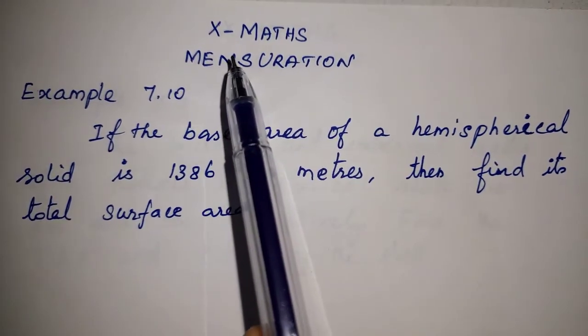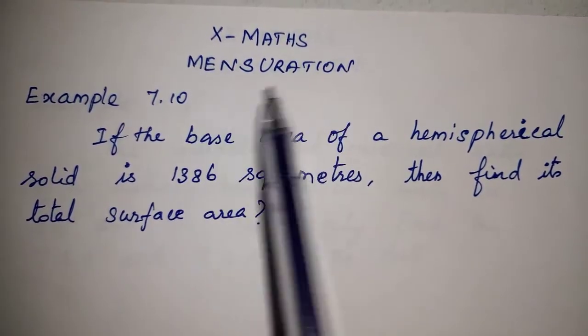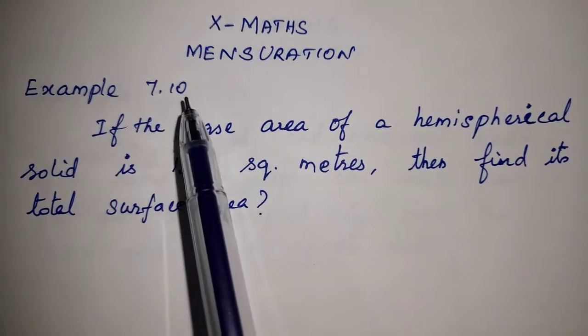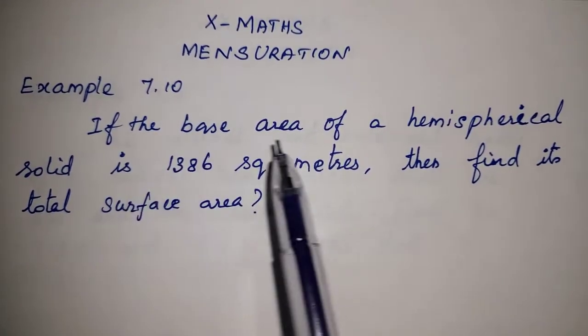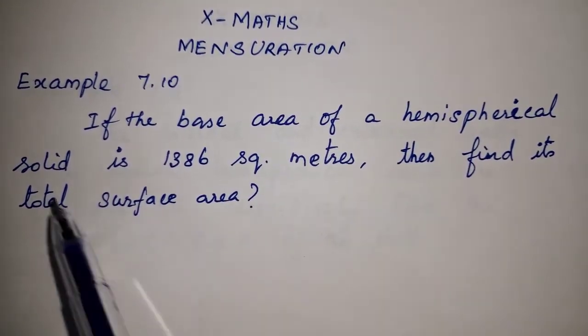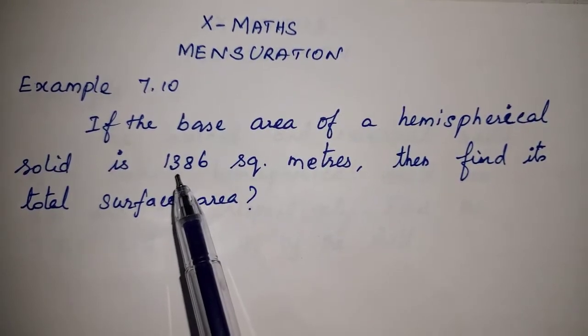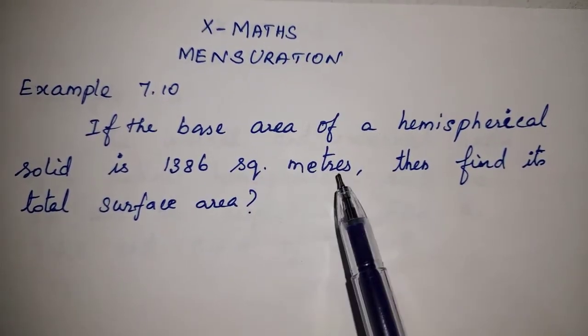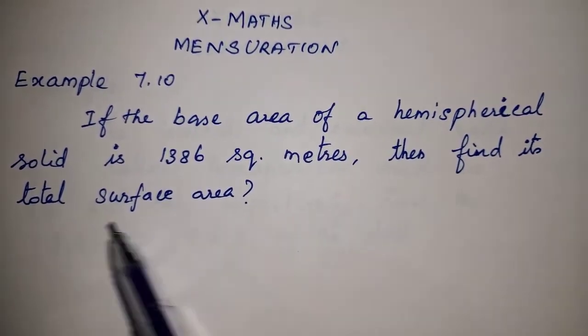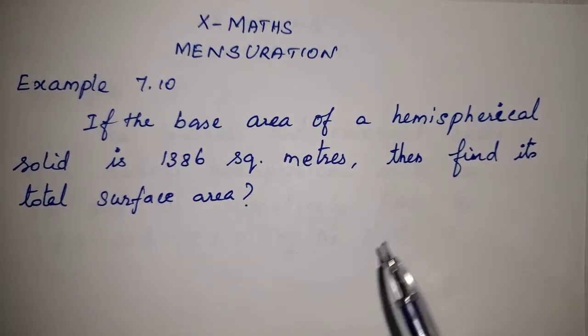Hi viewers, welcome to TomMath, 10th Standard Maths Lesson Mensuration, Example Number 7.10. If the base area of a hemispherical solid is 1386 square meters, then find its total surface area.